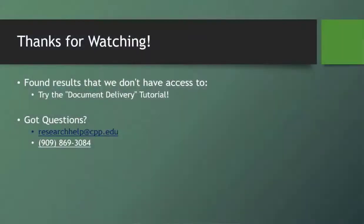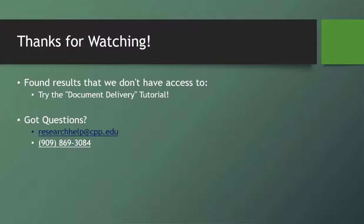So that's the basics of finding an article in Project Muse — pretty easy. If you find an article in Project Muse that we don't have access to, check out the document delivery tutorial, which will show you how to request that article. If you have any other questions, please contact us for assistance. You can contact reference librarians at libraryhelp@cpp.edu, or call the reference desk at 909-869-3084. Thank you for watching.